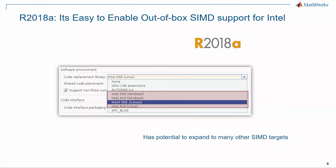To use this new SIMD feature, it's actually very easy. You open the Configuration Settings panel and go to the Code Replacement Library drop-down menu, and you'll see four new libraries there — the Intel SSE and AVX for Windows and Linux. After you select one of the tables, you don't have to do anything else. The SIMD intrinsics will be automatically generated for your code in Embedded Coder.